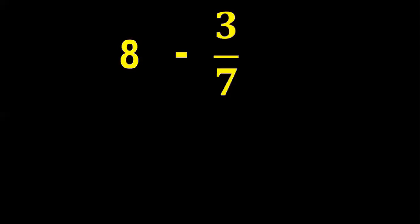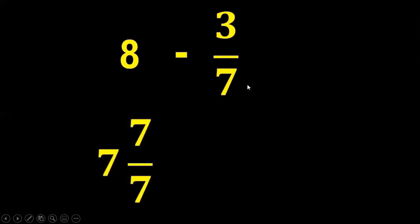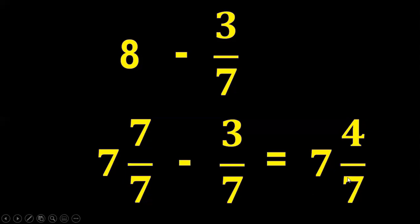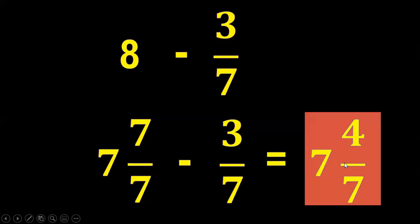Another one: eight minus three-sevenths. Rename it again. Since the denominator is seven, borrow one and divide into seven equal parts — so seven over seven. The new minuend is seven and seven over seven. Copy minus three-sevenths. Subtract the whole number: seven minus zero equals seven. Then subtract the numerator: seven minus three equals four, and copy the denominator seven. So the final answer is seven and four over seven.